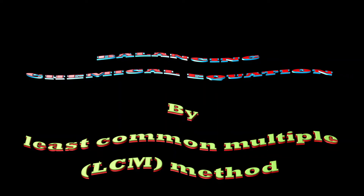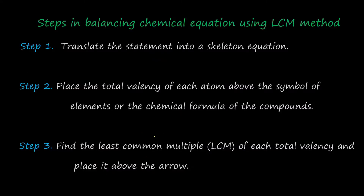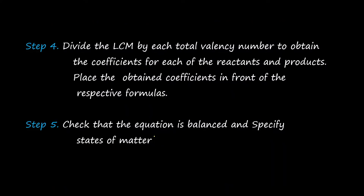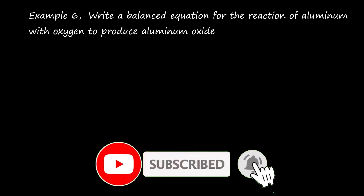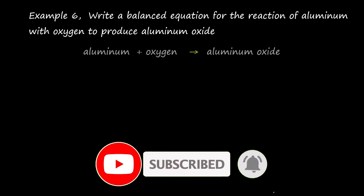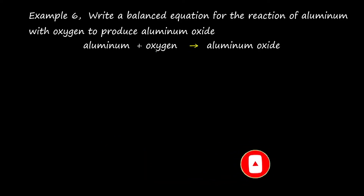Hello friends. In this video we will discuss how to balance the chemical equation using the LCM method. Write the balanced equation for the reaction of aluminium with oxygen to produce aluminium oxide. On the reactant side, aluminium and oxygen are present. On the product side, aluminium oxide is present.